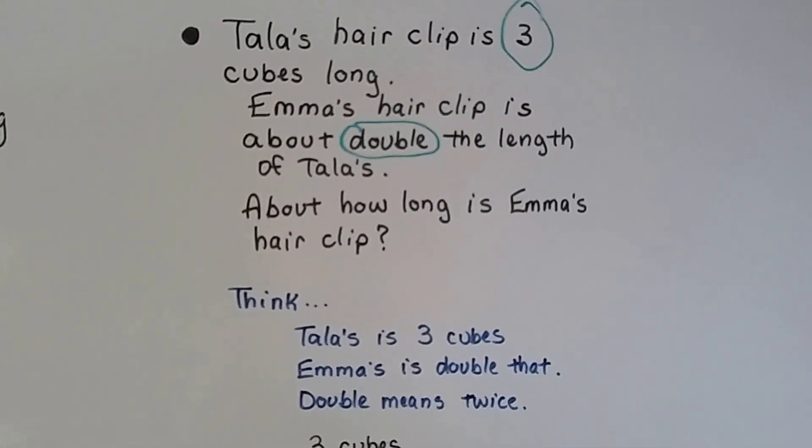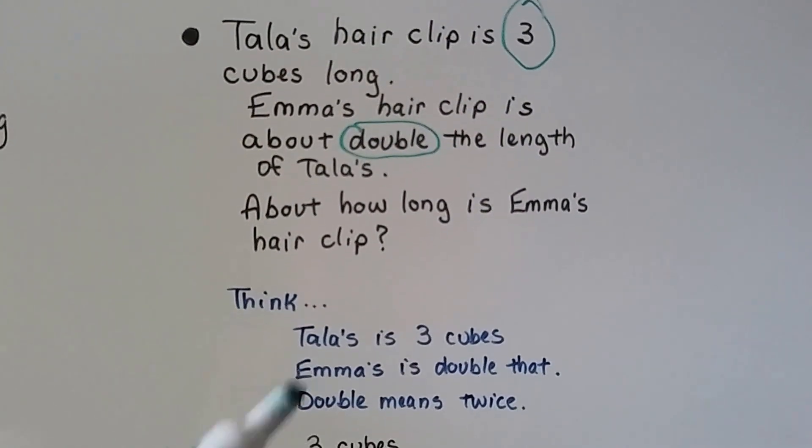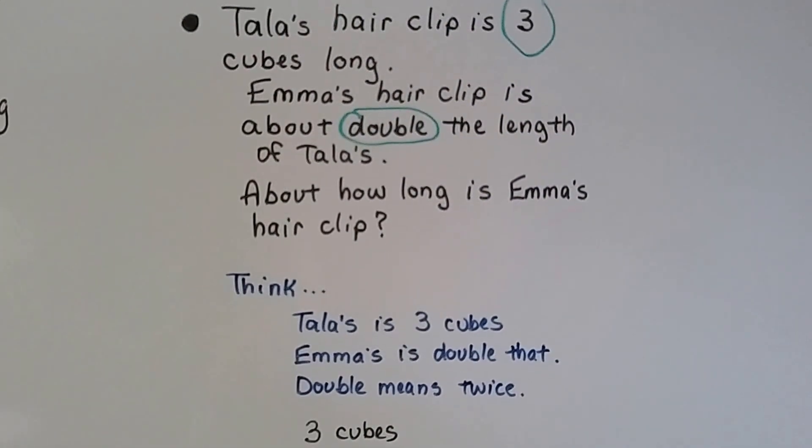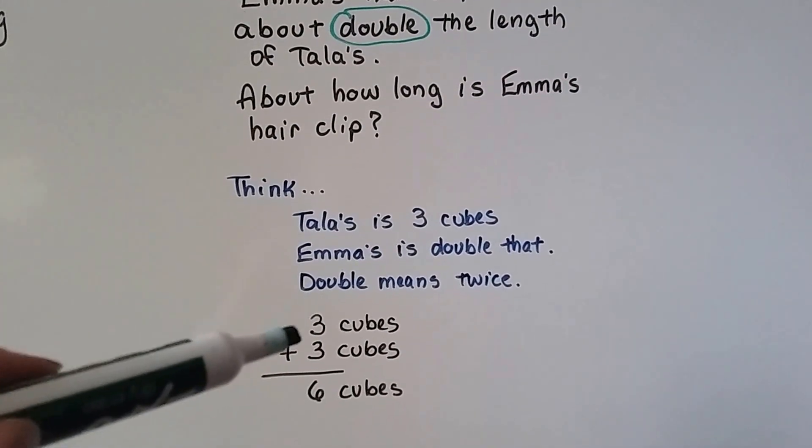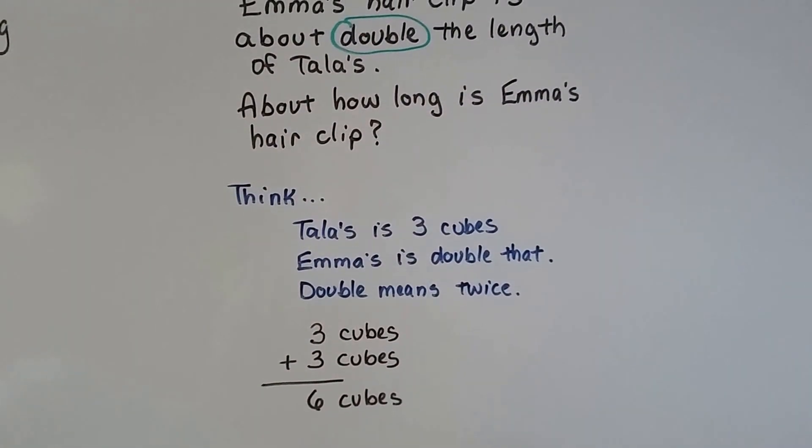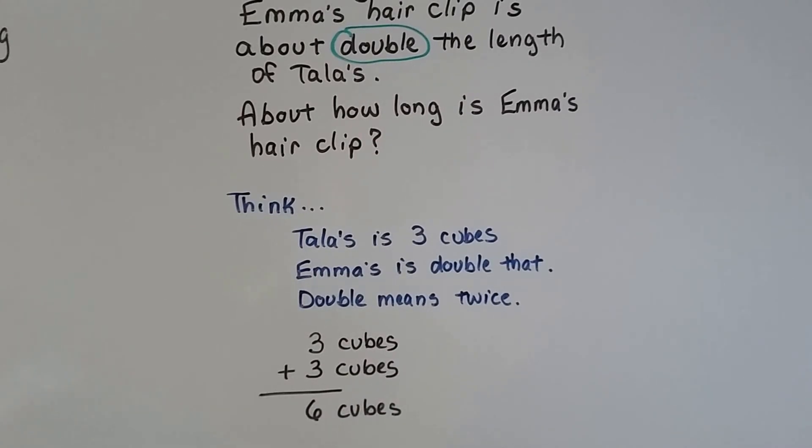Double means twice. So that means Tala's is going to be counted two times. So if hers is three cubes we do three cubes plus three cubes and we get six cubes. So we know Emma's hair clip is about six cubes.